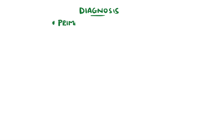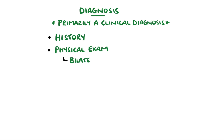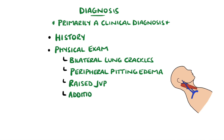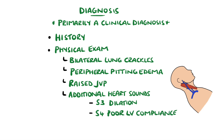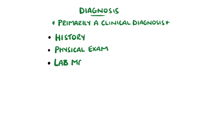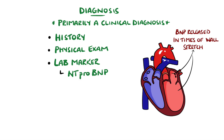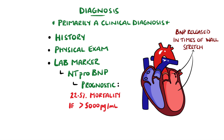Heart failure is primarily a clinical diagnosis. This includes an accurate history and physical examination, which can include bibasilar crackles on lung auscultation, peripheral pitting edema, a raised jugular venous pressure, abnormal heart sounds including an additional S3 in a dilated ventricle or an S4 in a less compliant ventricle, and hepatojugular reflux. Laboratory tests include the N-terminal proBNP, which stands for brain natriuretic peptide, which is released from the ventricles and the atria during periods of volume expansion and pressure overload. As well as a diagnostic marker, proBNP is a prognostic marker. Some studies have suggested that levels above 5000 pg per milliliter are associated with a 22.5% chance of mortality during the hospital stay.